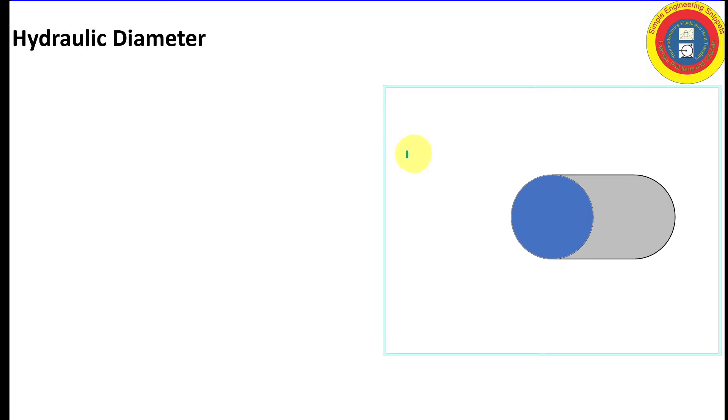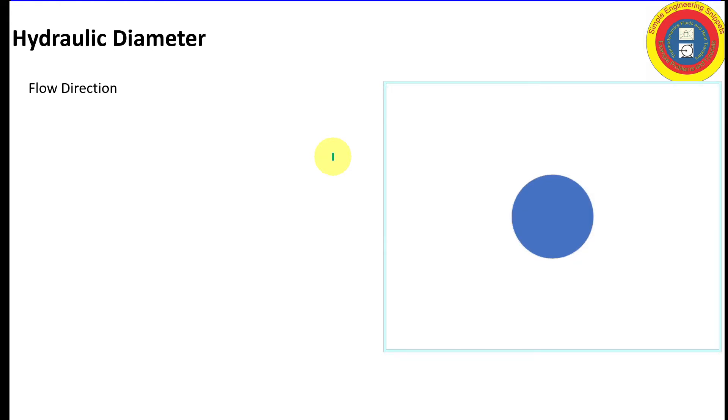So here's our example for our flow direction. This is a pipe and the flow is going to be going into the pipe. However we're going to be taking a two-dimensional view. And for all these examples we will be calculating the hydraulic diameter of the region shaded in blue.